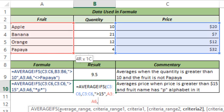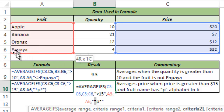My second criteria is on the name of the fruit, so I select the names. My condition is that the word should have the alphabet P in it. To do that I use wildcard characters: asterisk P asterisk. The asterisk wildcard means there can be any number of characters before the alphabet P. So if a word contains P, it can have any number of characters before it — for example, Apple would satisfy because it has one character before P, and Papaya would satisfy because it has zero characters before P. Asterisk means any number of characters: 0, 1, 2, or more. Similarly, the asterisk after P means any number of characters after P. So Apple and Papaya both meet the criteria, while Banana and Orange do not.